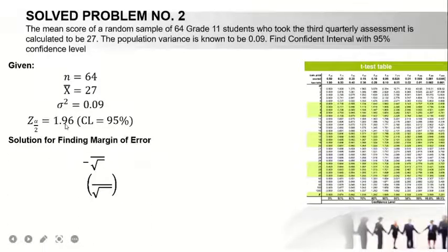Next, solution for finding margin of error. What is your standard deviation? I said this is tricky because your variance is 0.09, so from the variance, how are you going to find the standard deviation? Of course, you are going to find the square root of the variance, so your standard deviation will be 0.3, because that is the square root of 0.09. All over square root of 64 times 1.96, such as the critical value. This is your margin of error.